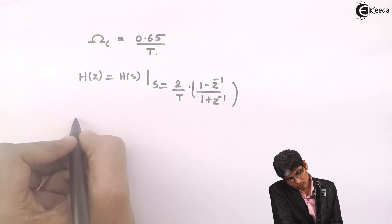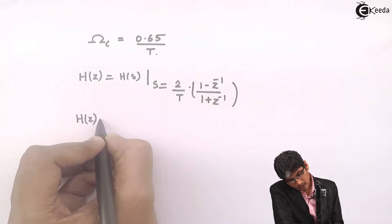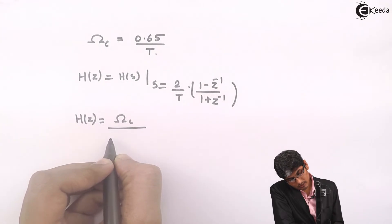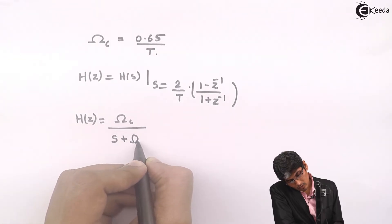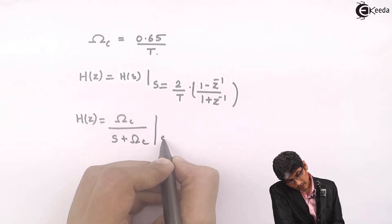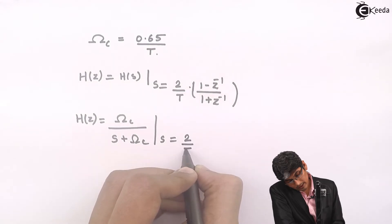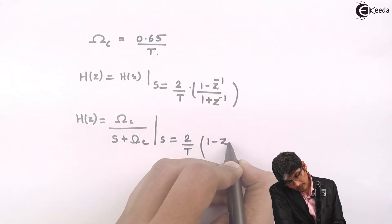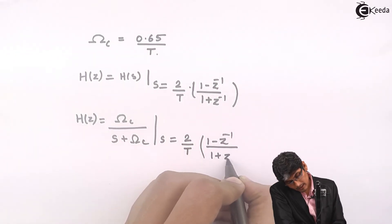So H(z) will be equal to Ωc/(s + Ωc) where s = (2/T)(1 - z⁻¹)/(1 + z⁻¹). Let us substitute the value of s.